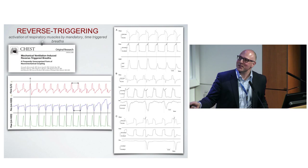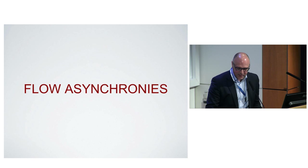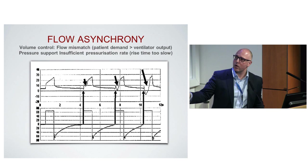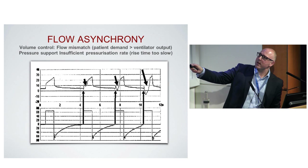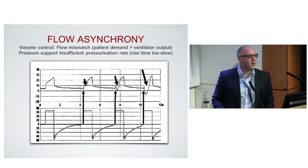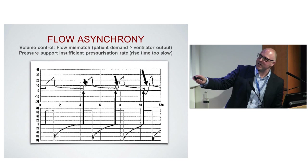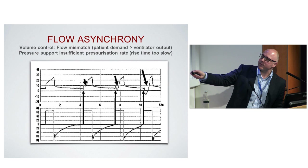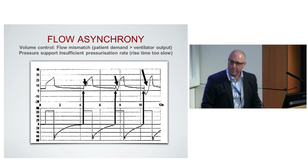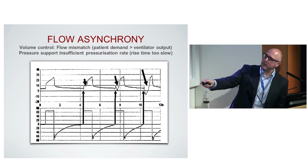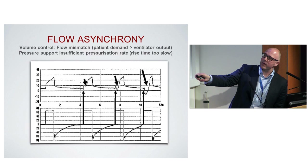Now flow asynchrony. In volume-controlled ventilation with a flat constant flow, you can see one waveform differs from another. When the pressure is pulled down during the breath, it means the flow is not sufficient — this is flow starvation. You can see various degrees of flow starvation from normal to progressively more severe. In volume control, if you see that pull in pressure, increase the flow and it improves.